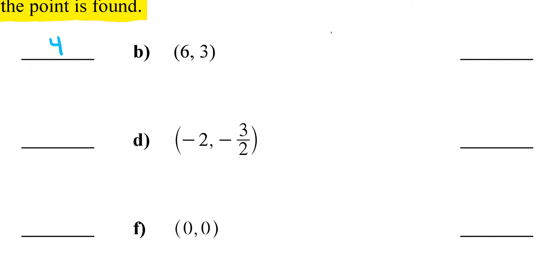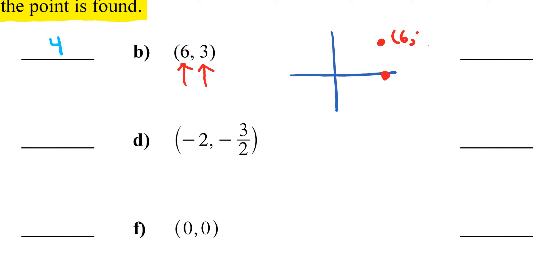For letter B, I go right 6 units and up 3. If I go right and up 3, this point is 6 comma 3, and that's going to be in quadrant 1.